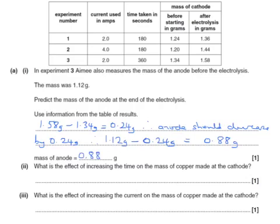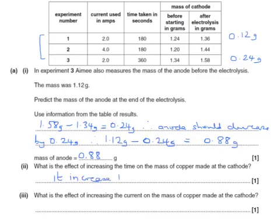What's the effect of increasing the time on the mass of copper made at the cathode? We need to look at experiment one compared with experiment three. In experiment one, using 2 amps for 180 seconds, we get 0.12 grams of copper made. Using double the amount of seconds, we get 0.24 grams made. So increasing the time increases the mass of copper.